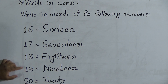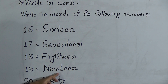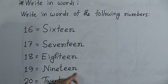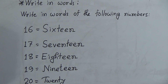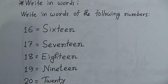The next number is 19. The spelling of 19 is N-I-N-E-T-E-E-N, 19. The last number is 2 and 0, which makes the number 20. The spelling of 20 is T-W-E-N-T-Y, 20.